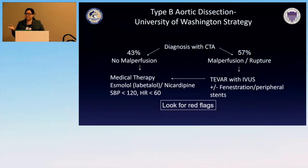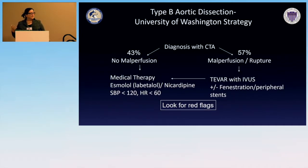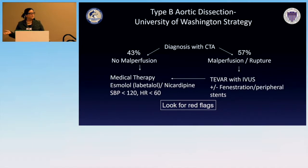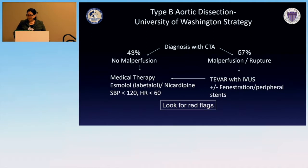When we look at people with type B dissection, we think of them as complicated versus not complicated — meaning are they dying right now? Do they have malperfusion, gut ischemia, limb ischemia, or rupture? Overall, about one-third are complicated versus two-thirds, but in our practice, a majority are complicated because they are referred to us for that reason, while uncomplicated patients tend to stay in their local hospitals.